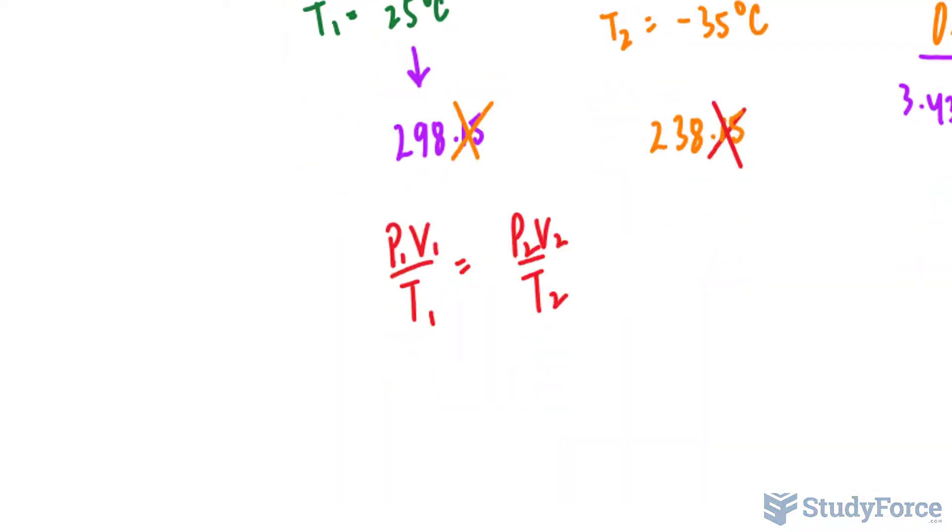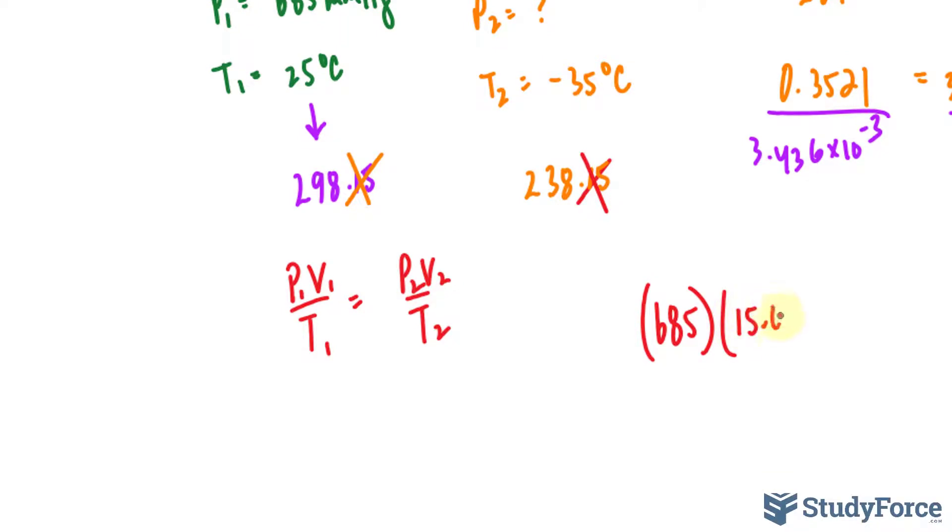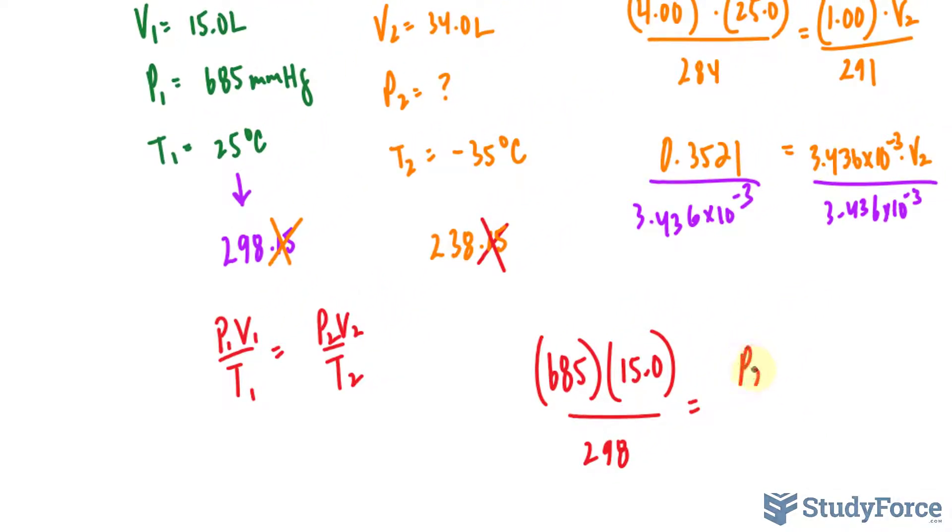Let's substitute everything we know. 685 times the volume, that initial volume was 15.0 over the temperature 298 and that is equal to P2 times the volume of 34.0 over 238. To find out this unknown, we cross multiply.